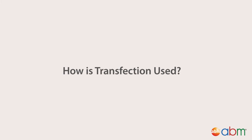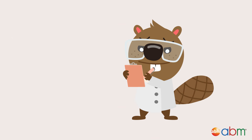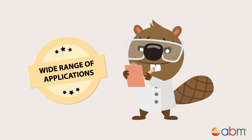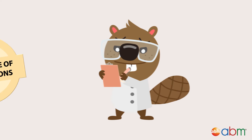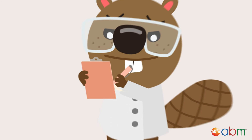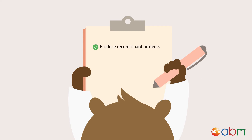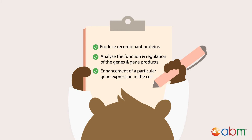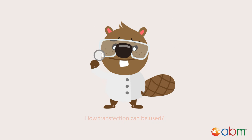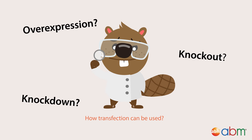How is transfection used? Transfection is a powerful technique and has a wide range of applications. Researchers use transfection as a means to produce recombinant proteins or to analyze the function and regulation of genes and gene products through an inhibition or enhancement of a particular gene expression in the cell.